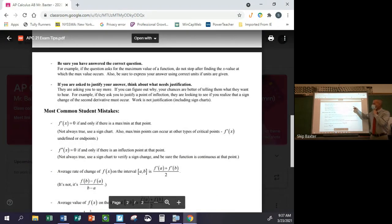Be sure you've answered the correct question. This is a common multiple choice thing that they'll fool you on. They'll ask you, what's the absolute maximum? And then one of the choices will be the x-coordinate of the absolute maximum, which isn't what they're looking for. They're looking for the y-coordinate if they're asking for the maximum.